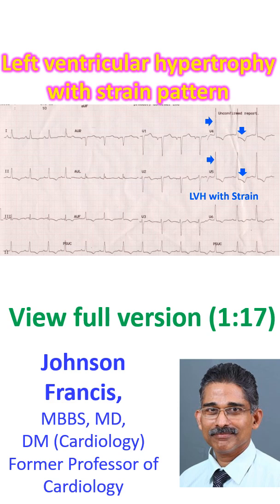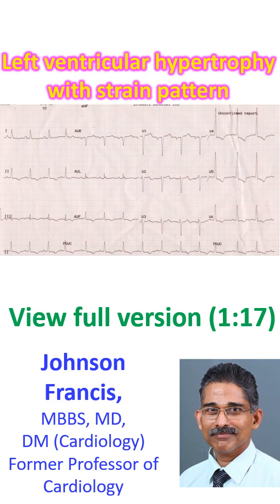Though the usual pattern in aortic regurgitation is left ventricular volume overload. Negative P waves in lead V1 are indicative of left atrial overload. Shallow T wave inversions are also seen in the inferior leads.